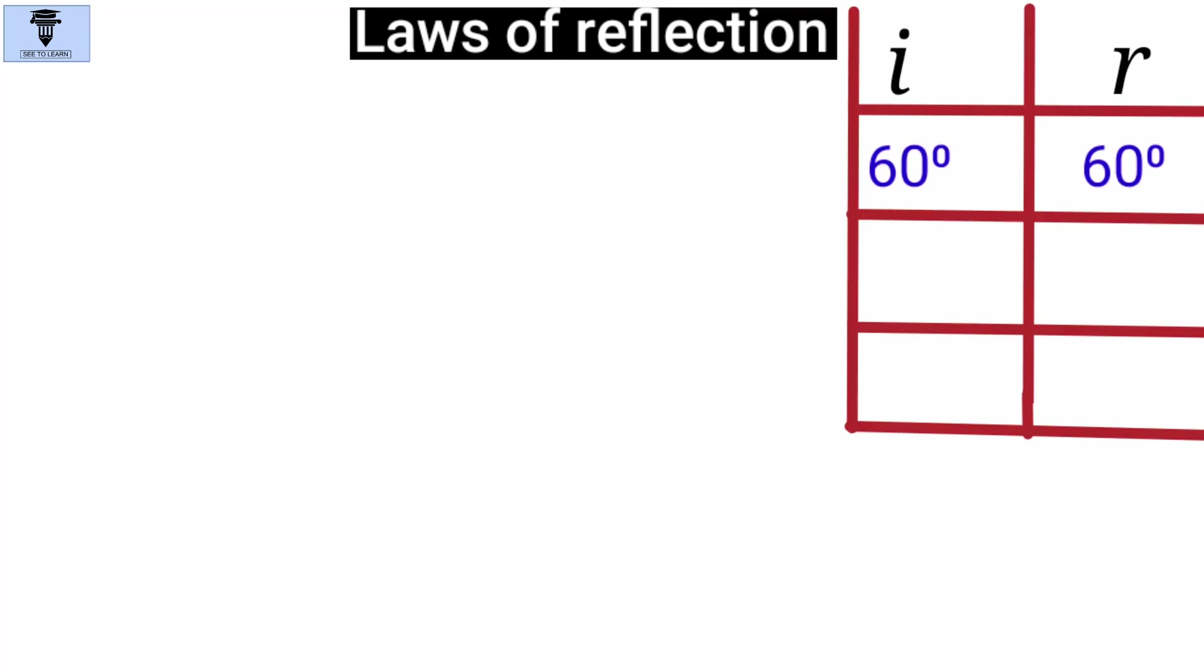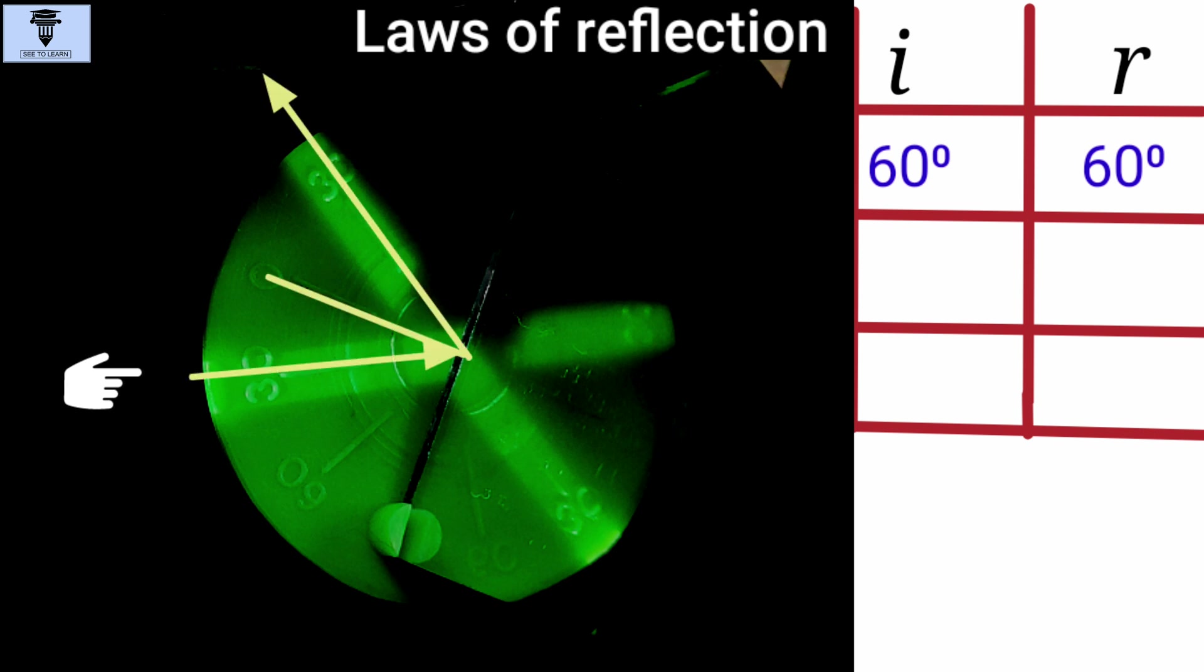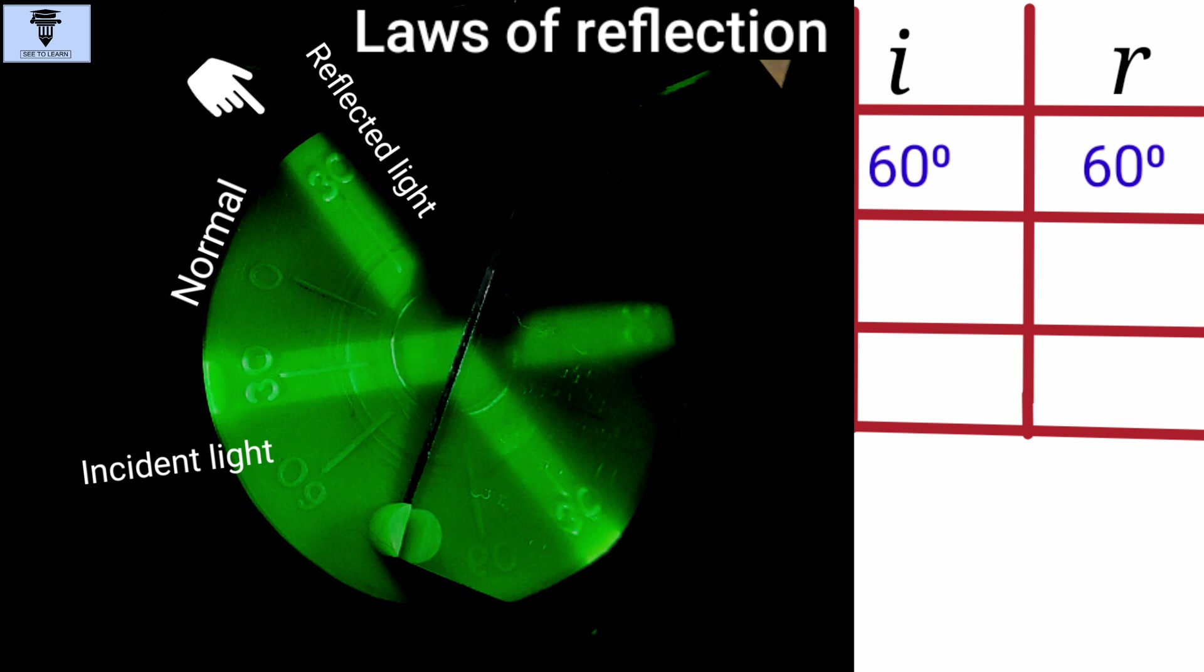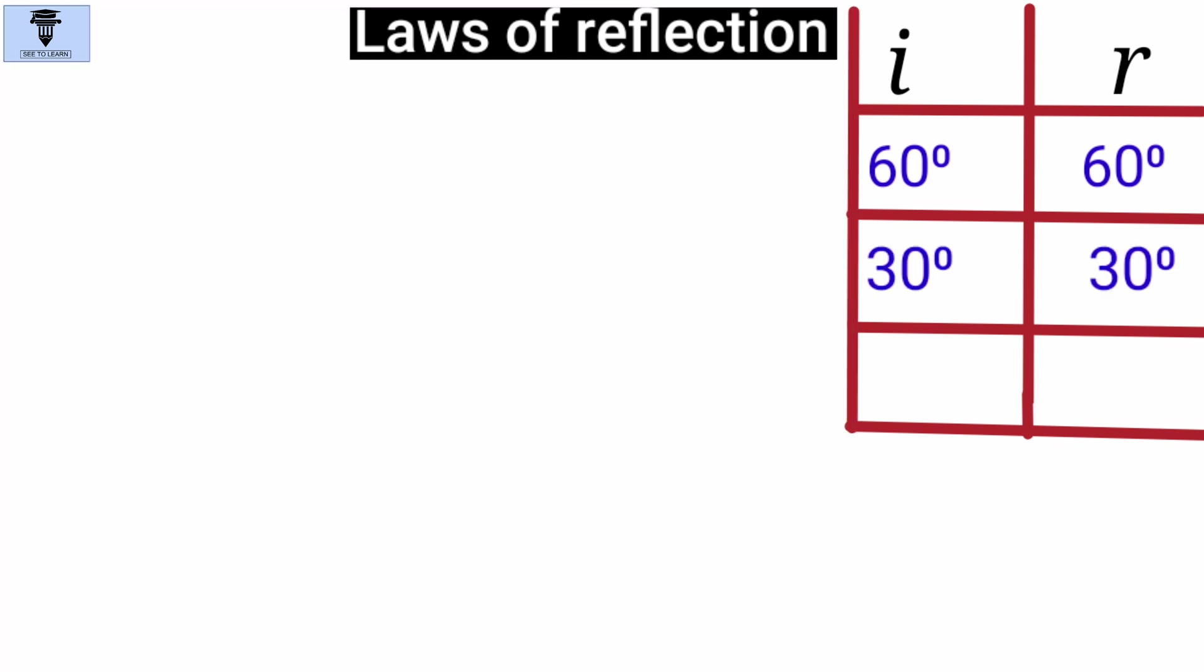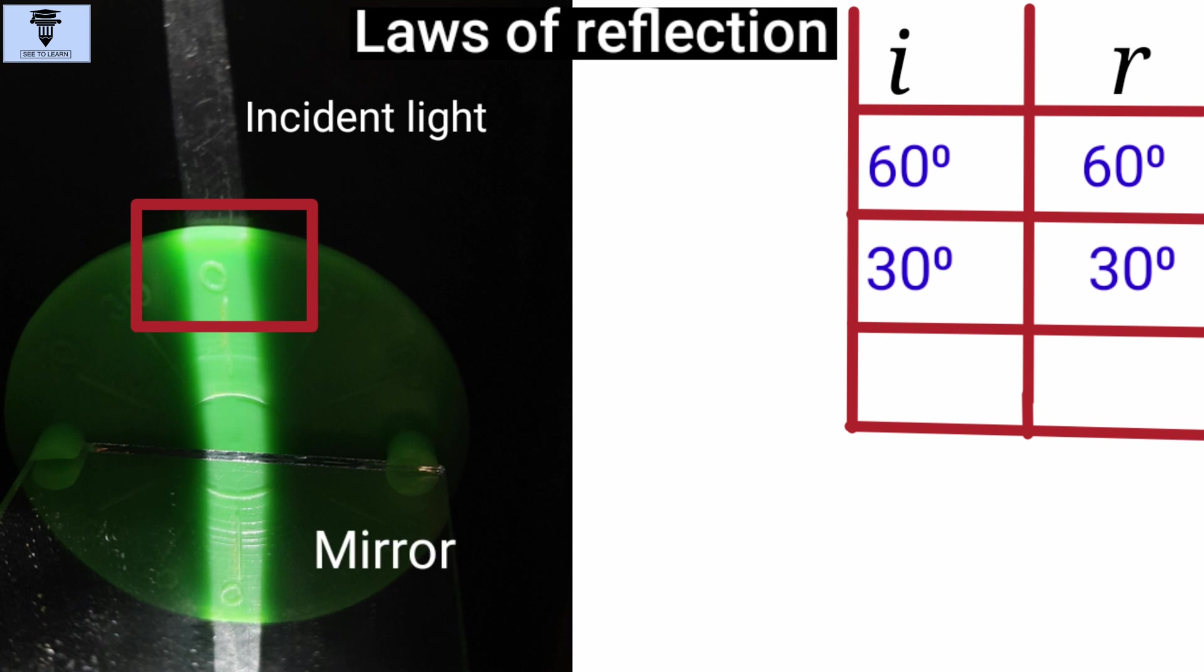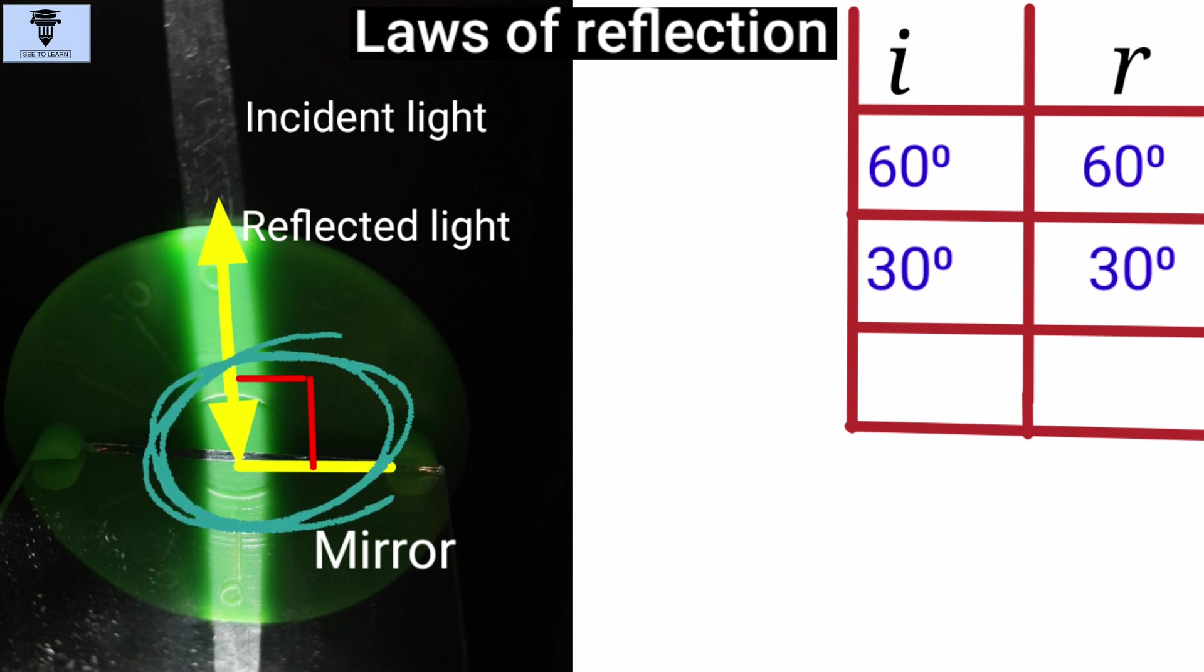Now, what if the angle of incidence is 30 degrees? Oh, look! The angle of reflection is also the same, that is 30 degrees. Let's reduce the angle of incidence to 0. Now, the incident light is perpendicular to the surface of the mirror. What we see here is the reflected light bounces off in the same direction, which means the reflected light is also perpendicular to the surface of the mirror. Thus, when the incident angle is 0, the reflected angle is also 0.